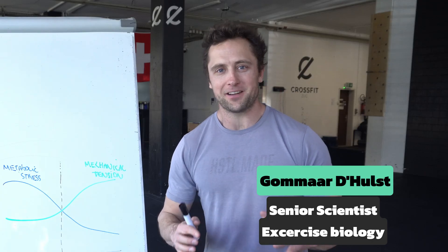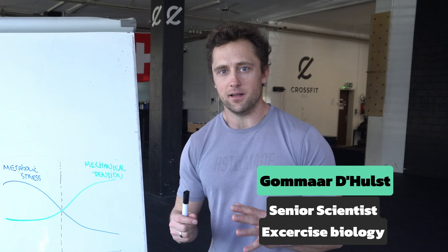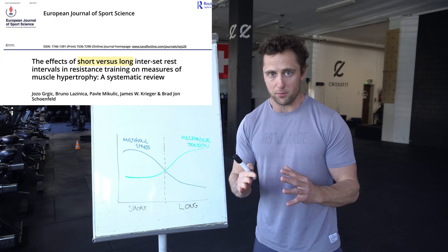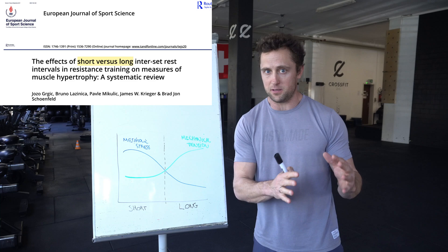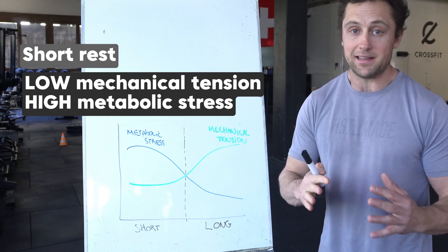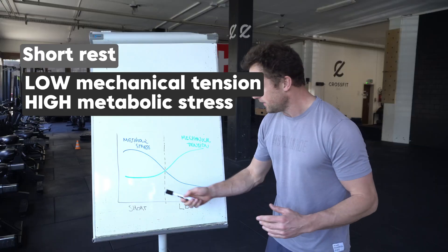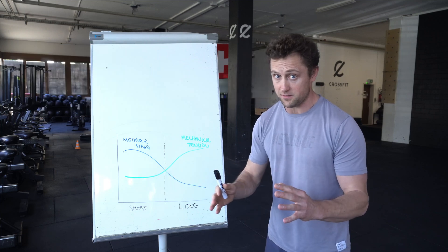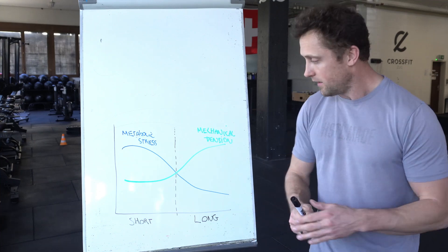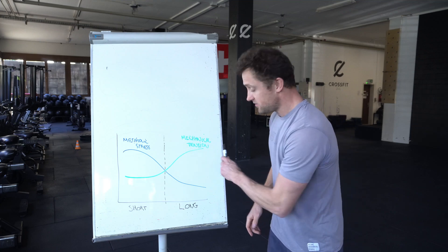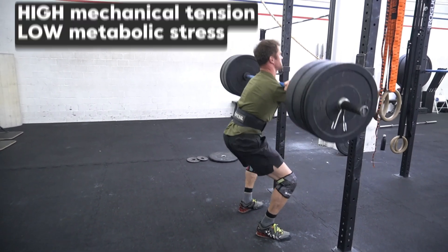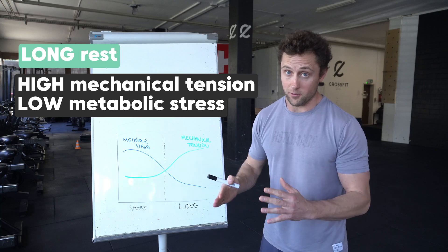Before we go into the actual testing, let's look in more detail at the difference between short and long rest periods. With a short rest period — for example, 30 seconds between sets — you have a lot of metabolic stress building up, but the weight on the bar can never be that high because you're fatigued from the previous set, so the mechanical tension is pretty low. With longer rest periods, for example three to four minutes, you can put much more weight on the bar, but the metabolic stress will be lower.